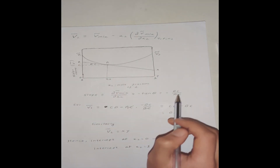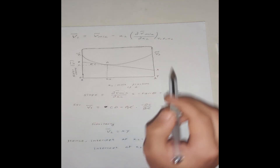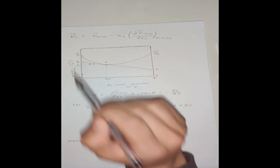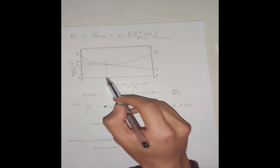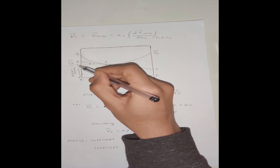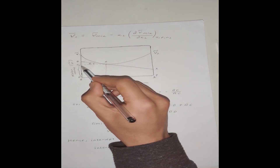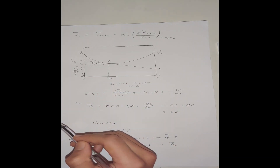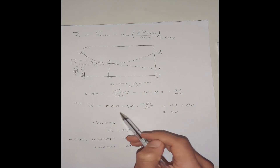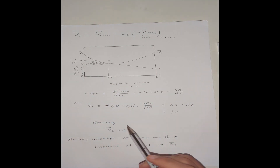Now I substitute dV/dx₂ into the expression. At mole fraction x₂, the molar volume of the mixture is the intercept CD, and x₂ is AC, and the partial derivative equals −BC/AC. Substituting these geometric quantities, the two terms AC cancel, and I am left with CD + BC, which equals BD. So the partial molar volume of component 1 equals the intercept BD.